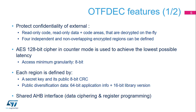Four independent and non-overlapping encrypted regions can be defined. The AES 128-bit cipher in counter mode is used to achieve the lowest possible latency. Access minimum granularity is 8 bits. Each region is defined by a 128-bit secret key and its public 8-bit CRC. The initialization vector of each region is built by OTF-DEC using a 64-bit application information and a 16-bit library version, which the user can define as public diversification data. The OTF-DEC has a unique AHB slave interface used to access control and status registers and to transfer data to encrypt and decrypt.